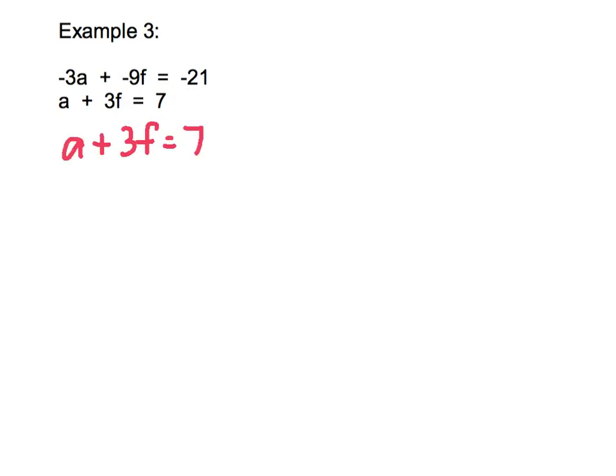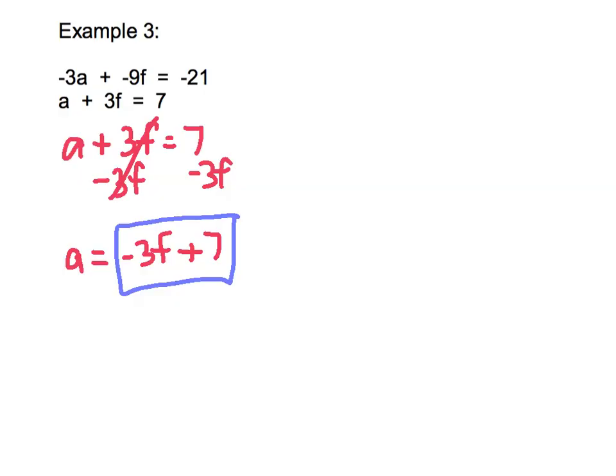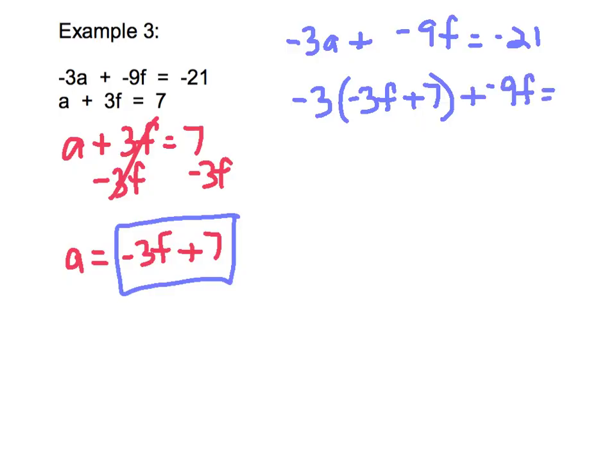So, all I need to do is subtract 3f on both sides, which will cancel these out, and a is now isolated. I'm going to say that a is equal to negative 3f plus 7. Our next step is going to be to take that value and put it in place of a into our first equation. So, we will take negative 3 times that a value, which we said was negative 3f plus 7 plus negative 9f equals negative 21.